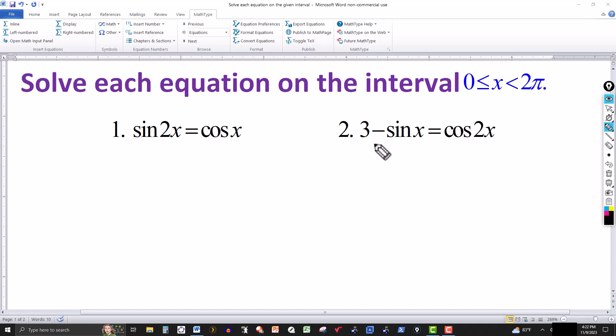For the second one, we have 3 - sin(x) = cos(2x). There's an identity for this one. We can replace the cos(2x). We can write this either in terms of cosine or sine. Since this is sine over here, we want it in terms of sine. So the identity is 1 - 2sin²(x). So now this equation becomes 3 - sin(x) = 1 - 2sin²(x).